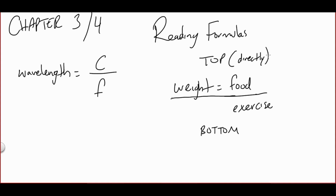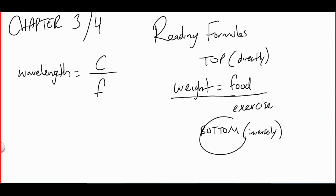Directly related means you will behave the same way. If one goes up, the other one goes up; if one goes down, the other one goes down. So directly related means it will behave the same way. If you're on the bottom, you are inversely related, which is the opposite of directly.